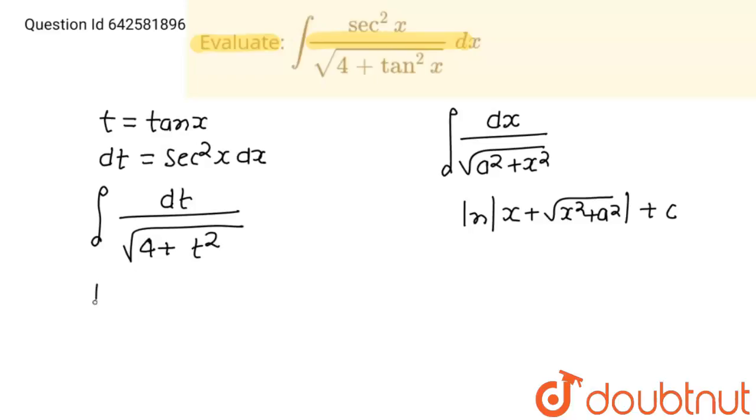So, this integration will become ln mod t plus square root 4 plus t square plus c and t is tan x.